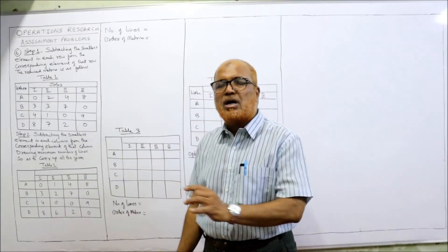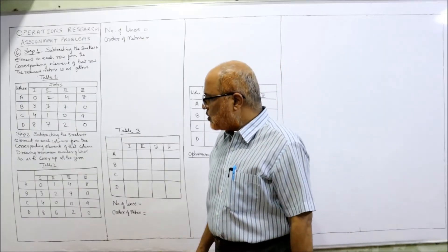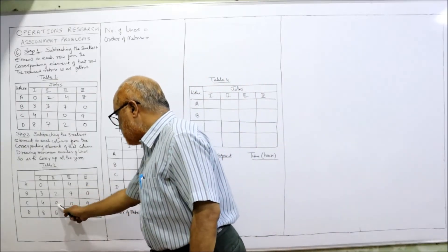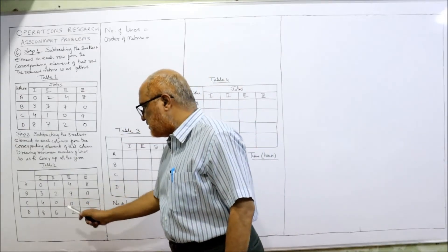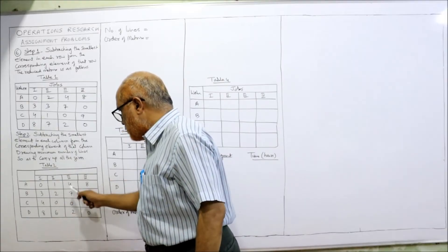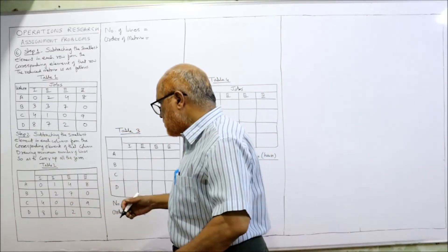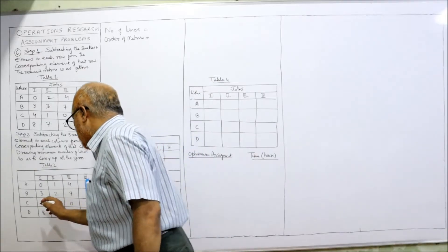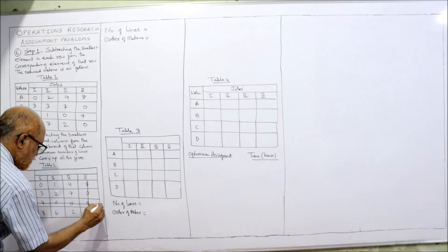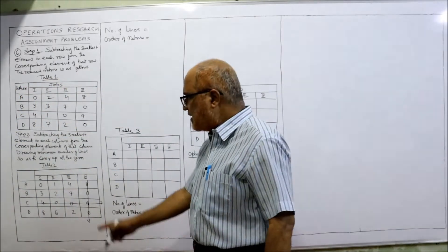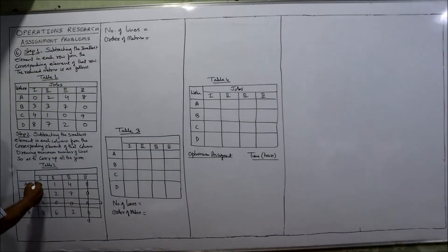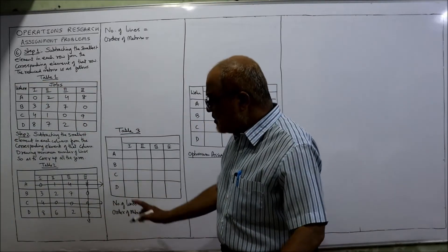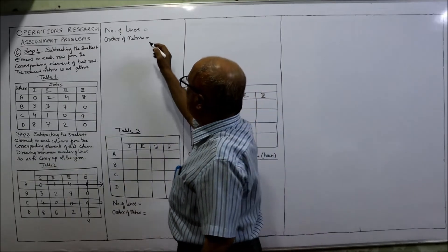Now draw the minimum number of lines to cover up all the zeros. Row wise: 1, 0, 1, 0, 2 zeros, and 1 zero — maximum 2 zeros are in the third row. Column wise: 1, 0, 1, 0, 1, 0, 2 zeros — the last column also has 2 zeros. So we draw a line through the last column covering 2 zeros, a line through the third row covering 2 zeros, and one more horizontal line for the remaining zeros. Number of lines: 3.